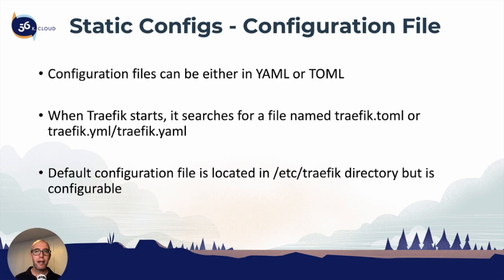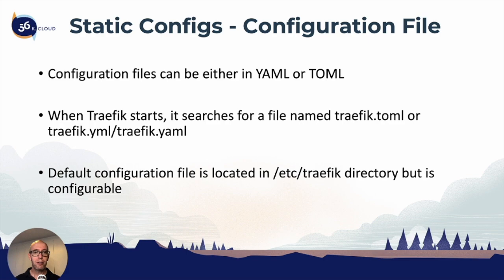What do the static configuration options look like? Let's first look at the configuration file. The configuration file can be either in YAML or TOML format. When Traefik starts, it actually searches for the traefik.toml or traefik.yaml file and looks in the /etc/traefik directory. If the traefik.toml or traefik.yaml file exists, then it reads in the configuration. The default configuration location can also be changed — that's an option available within the static configuration.